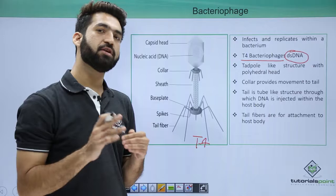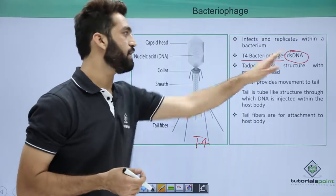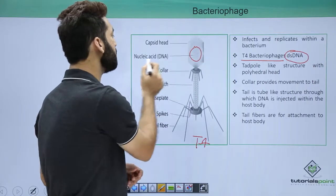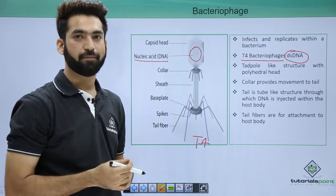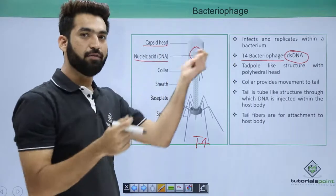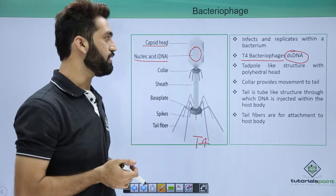Remember, most of the bacteria-infecting viruses are double-stranded DNA. You can look, this is double-stranded DNA, this is the nucleic acid. The DNA gets protection with the help of capsid. This is the head of the capsid which is actually made up of protein.